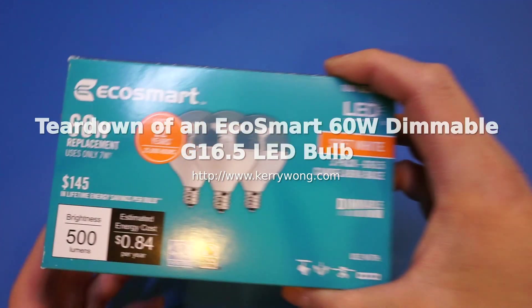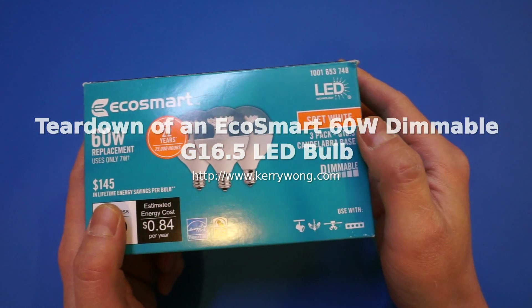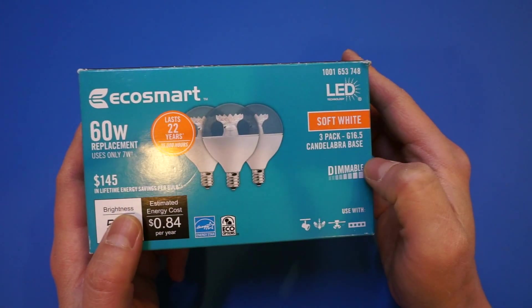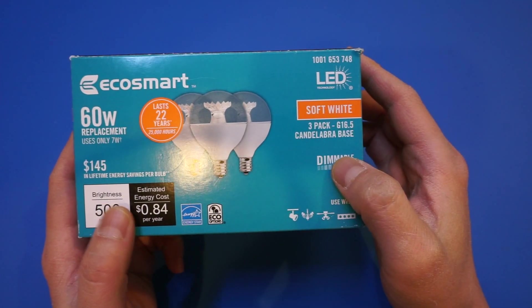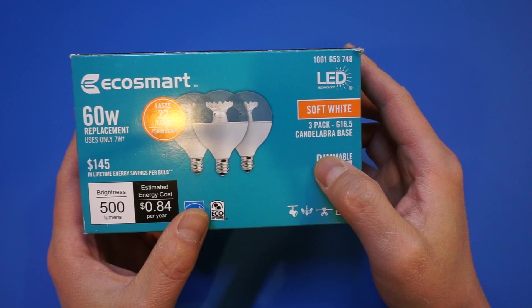I recently bought a bunch of these EqualSmart 60 watt equivalent LED bulbs. They are of the G16.5 style with an Edison 12 or E12 type of base.